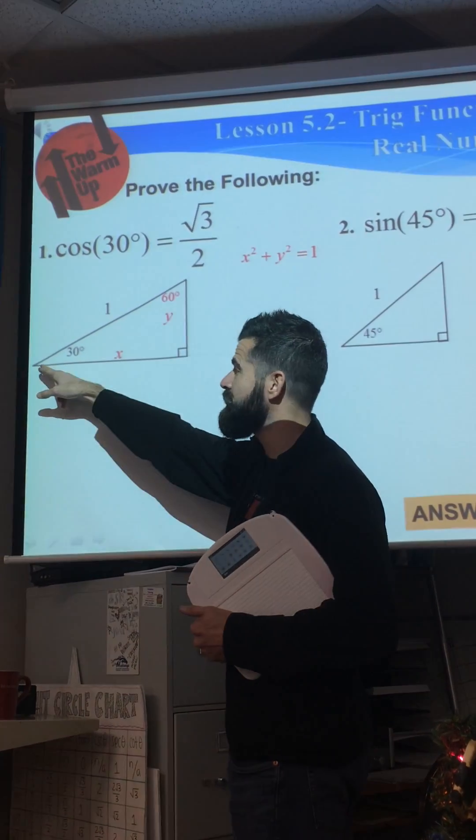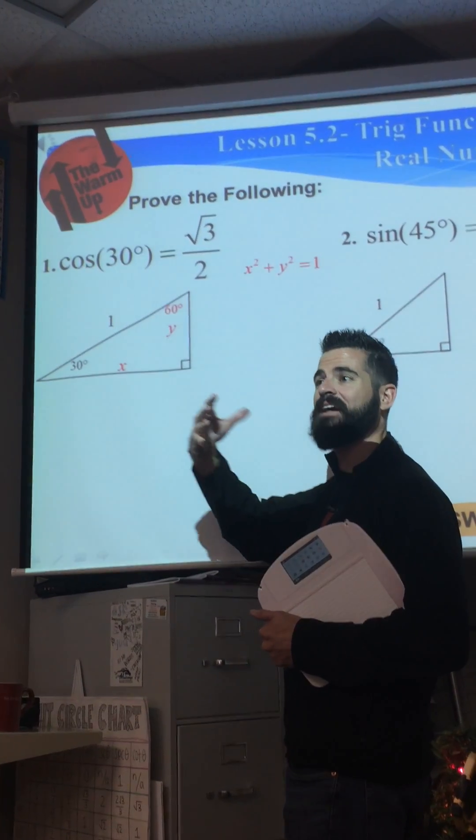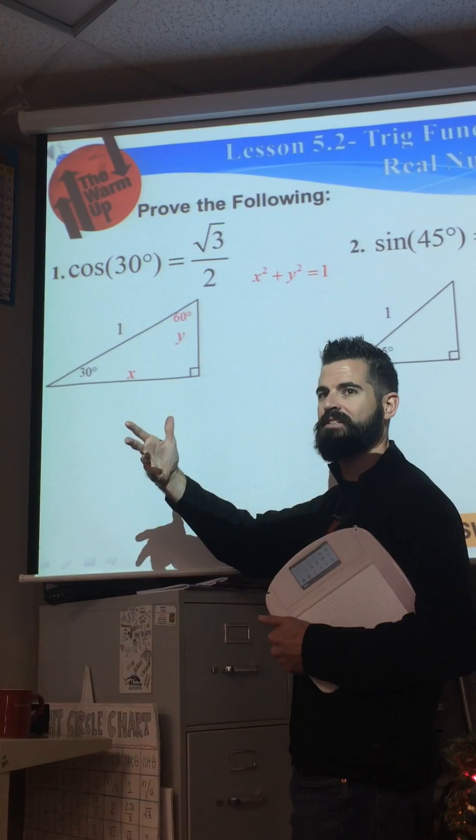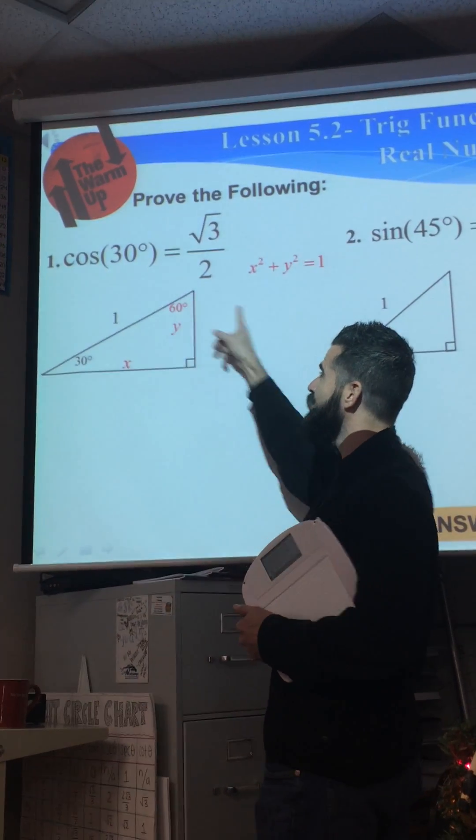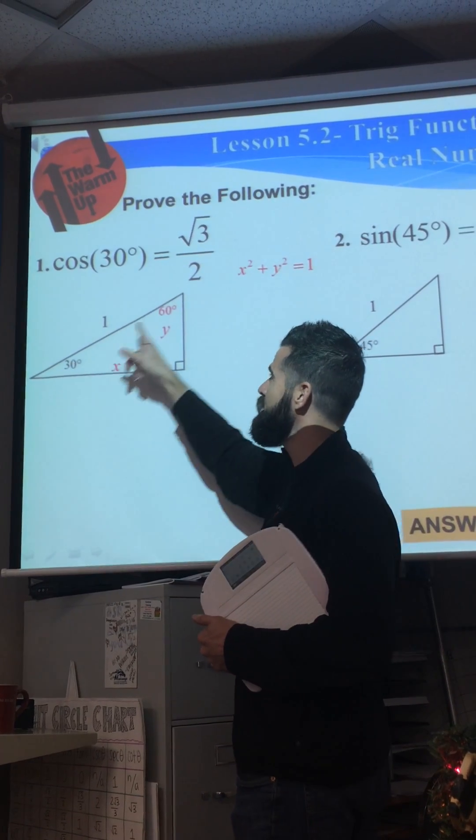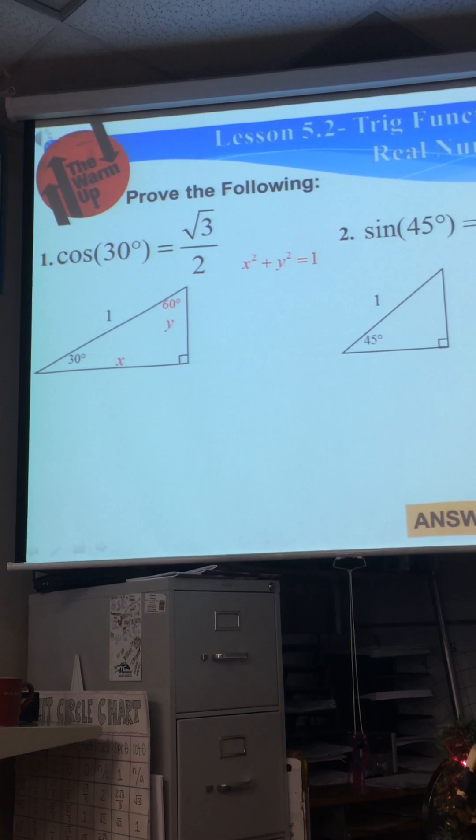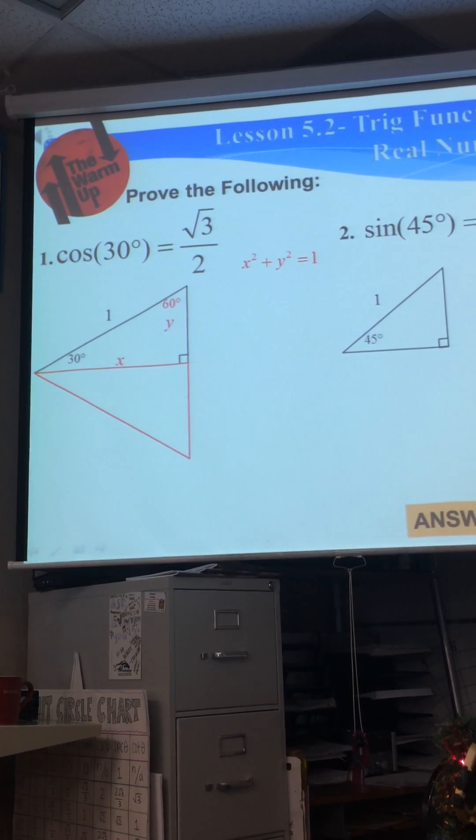What we're going to do is reflect the same triangle underneath. Now the way I can tell people are just trying to memorize instead of understand is they reflect it this way. Do you see how that's going to be weird? You're going to have a 30-120-30 triangle, so that's not going to work. You want to reflect it down.